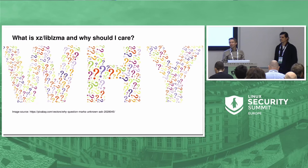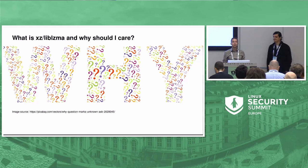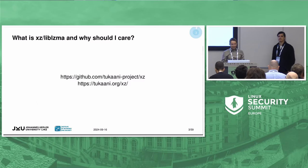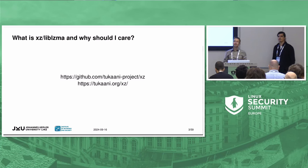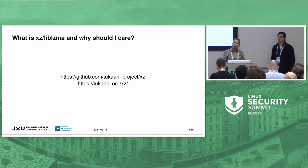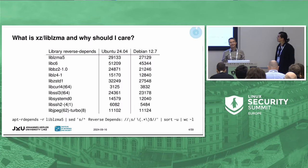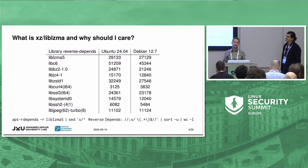So why should we care about a kind of small, obscure packer if you're not using it explicitly? Well, there is an open source project — we are talking about open source here. There is a GitHub repository, there's a GitHub page. Previously it was hosted somewhere else. And it came to media attention because XZ has a very large reverse dependency tree. You may not have heard of it before, but you have used it implicitly in many different places.